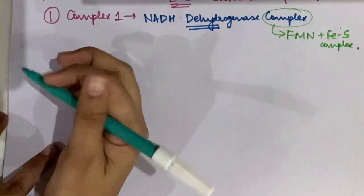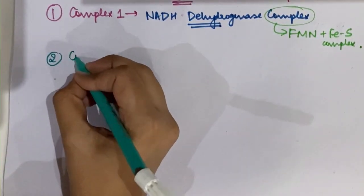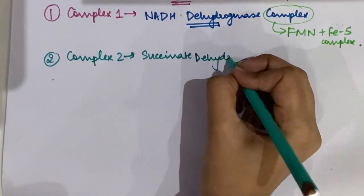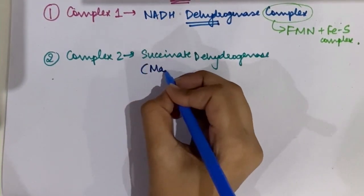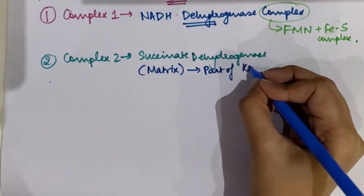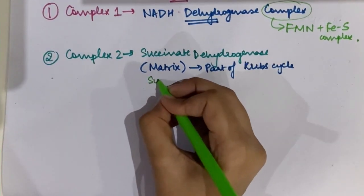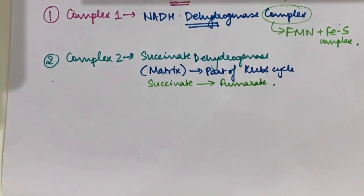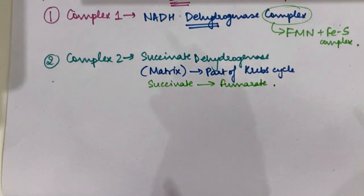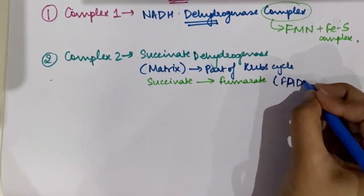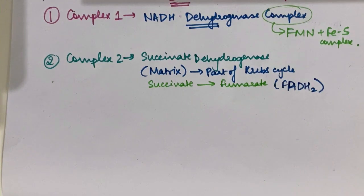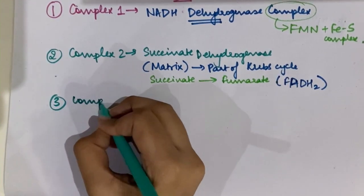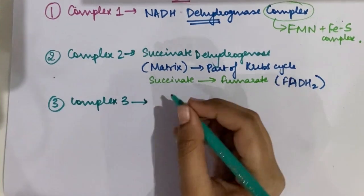Complex 2 is the succinate dehydrogenase complex. Its speciality is that it is not present in the inner membrane of the mitochondria but rather in the matrix, and it is a part of the Krebs cycle. Succinate dehydrogenase catalyzes the conversion of succinate into fumarate, producing FADH2 which is used for electron donation. Succinate dehydrogenase also contains an iron-sulfur complex.